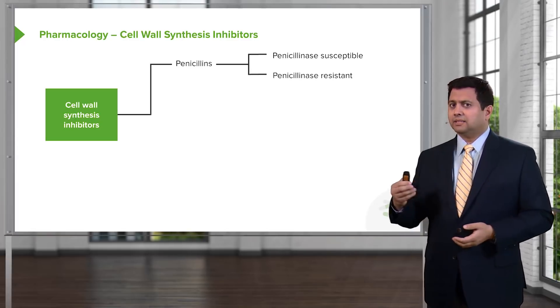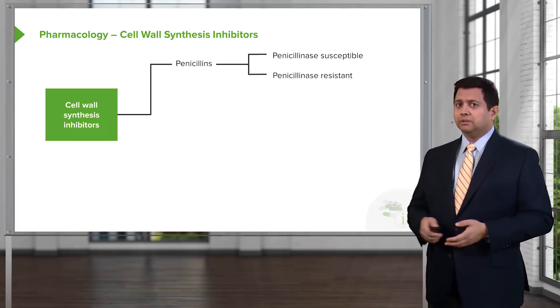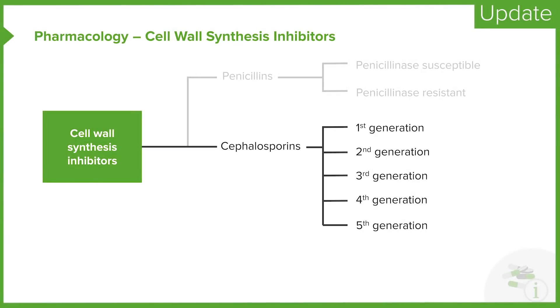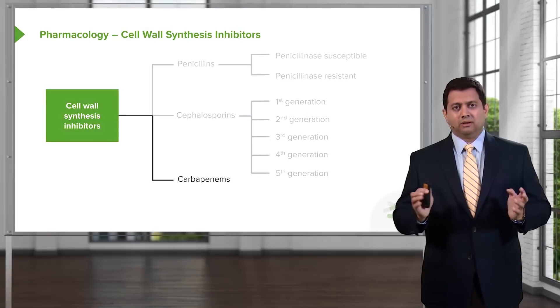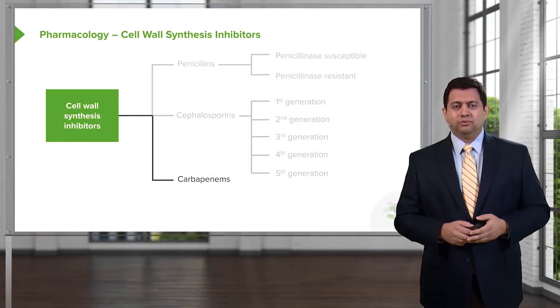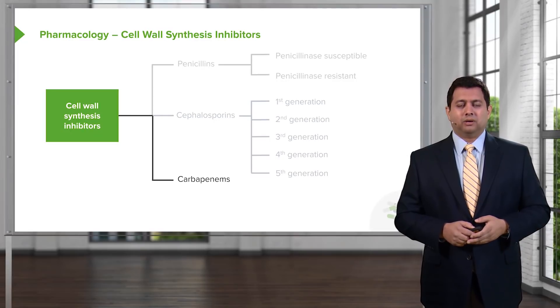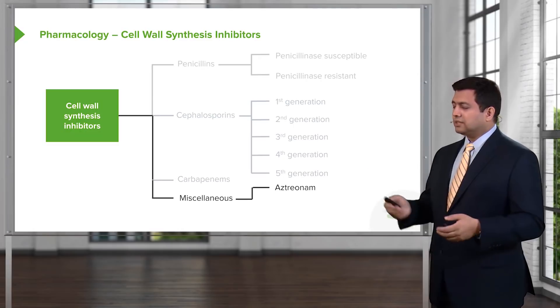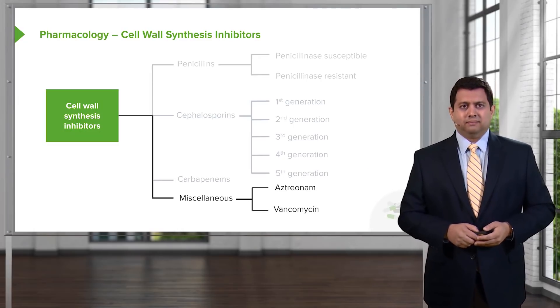With the penicillins, we have penicillinase-susceptible and penicillinase-resistant agents. Within the cephalosporins, we have first, second, third, fourth, and fifth generation. Carbapenems are a relatively new group of drugs that have come onto the market recently. And then we have miscellaneous drugs, which can include aztreonam and vancomycin.